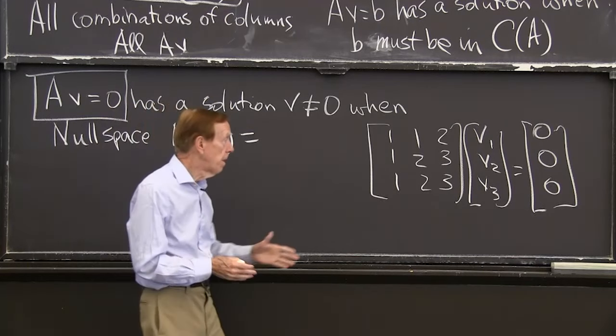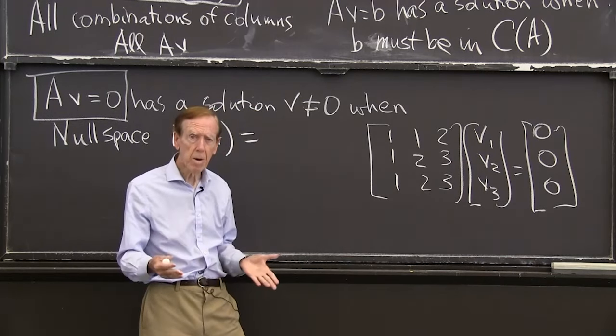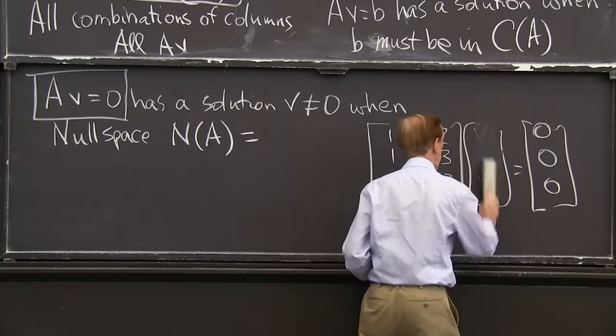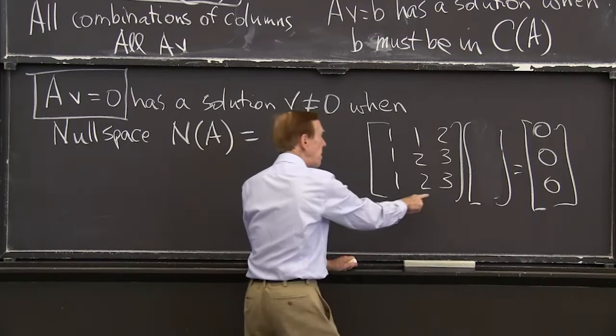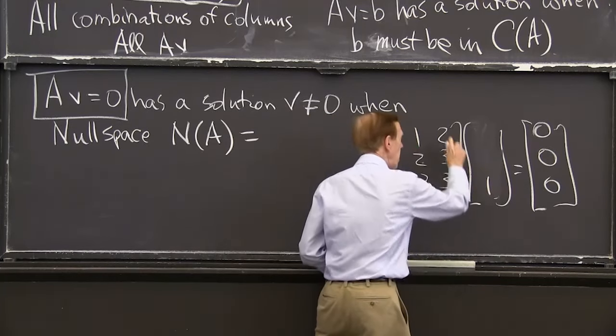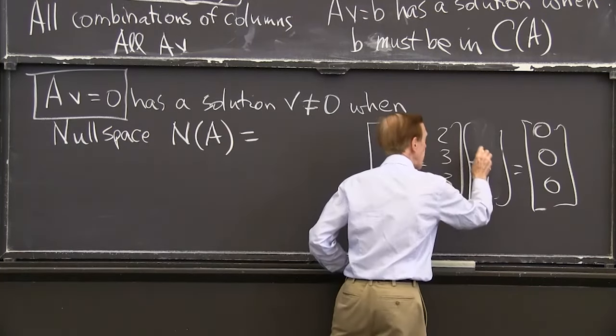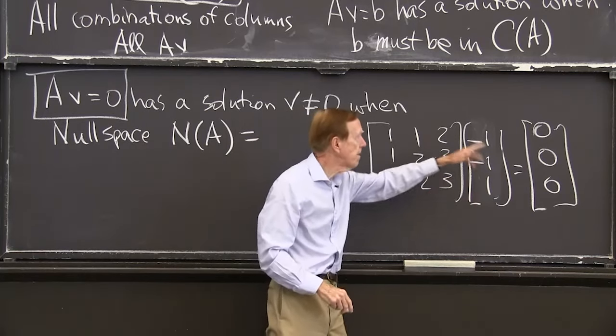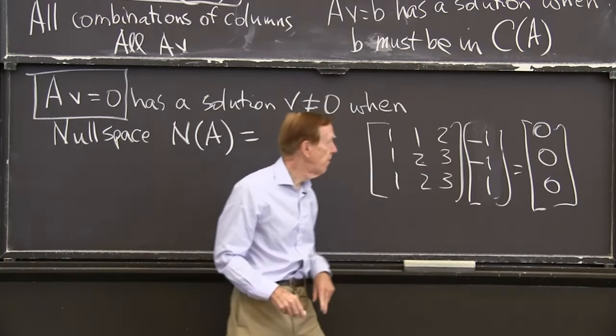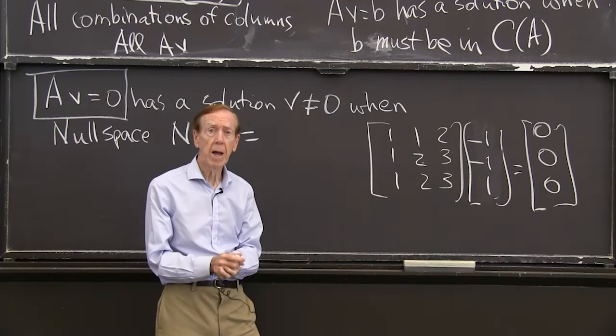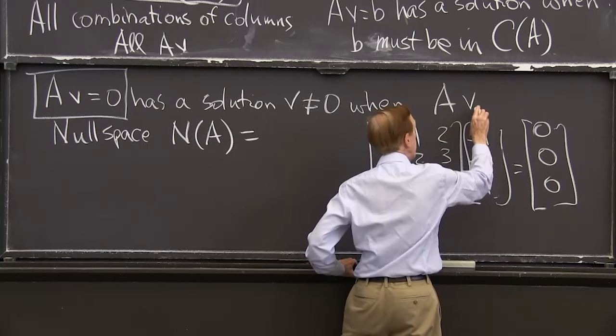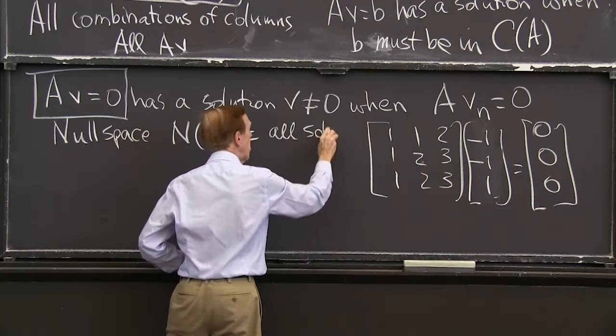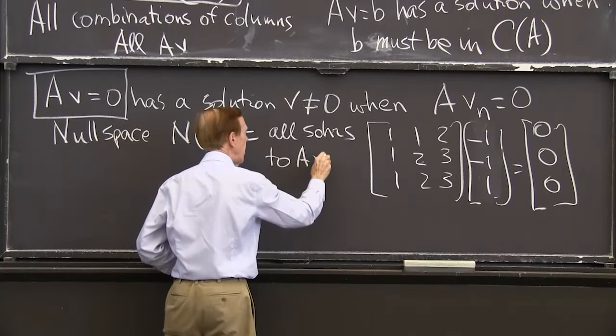And here, for this deficient, singular, non-invertible matrix, there is. There is another solution. Let me just write it down. Do you see what the solution is? The column is the sum of those two. So if I want one of that column, I should take minus one of the other columns. So this is minus this column, minus this column, plus this column gives me the 0 column. That is a vector in the null space. That's a solution to A, V, equals 0.